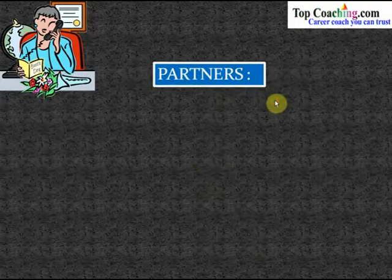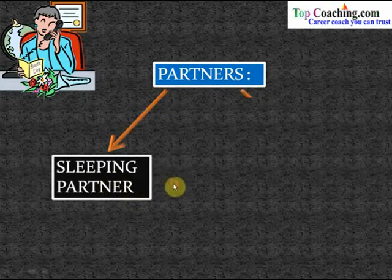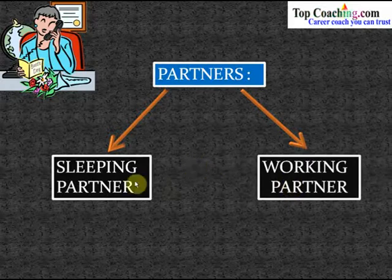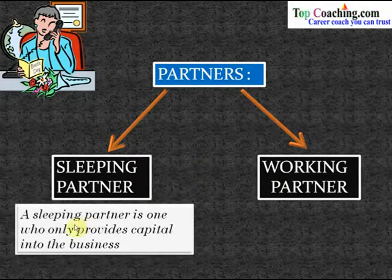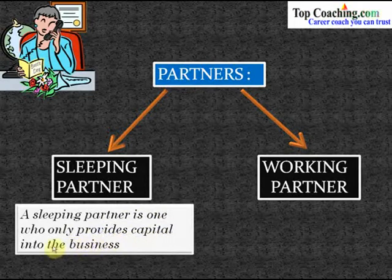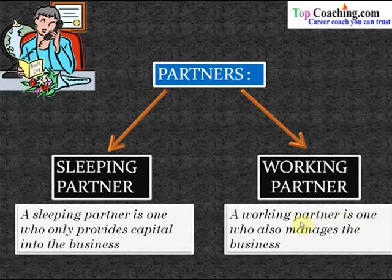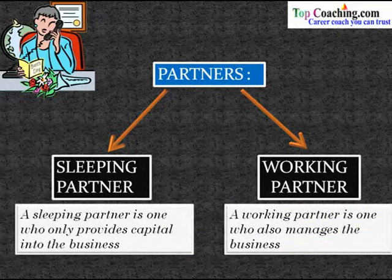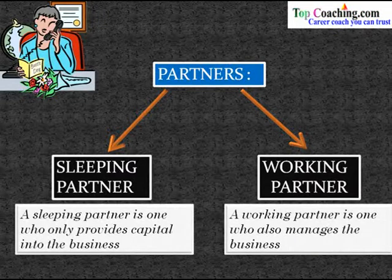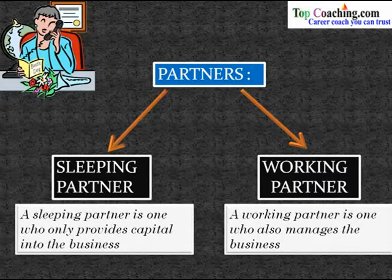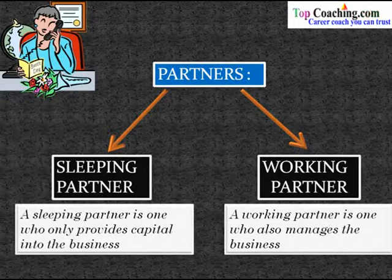Partners can be of two types: a sleeping partner and a working partner. A sleeping partner is one who only provides capital into the business — they simply invest without managing it. A working partner, on the other hand, both invests in and manages the business. The basic difference is that the sleeping partner does not manage the business while the working partner does.